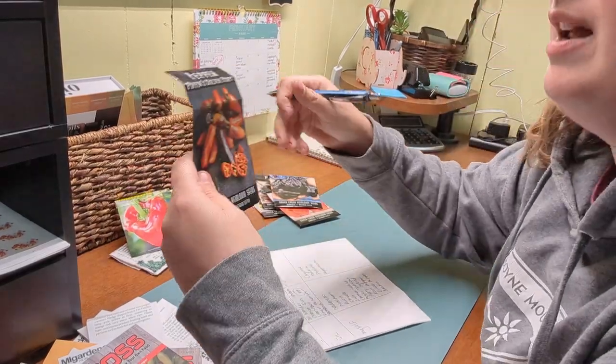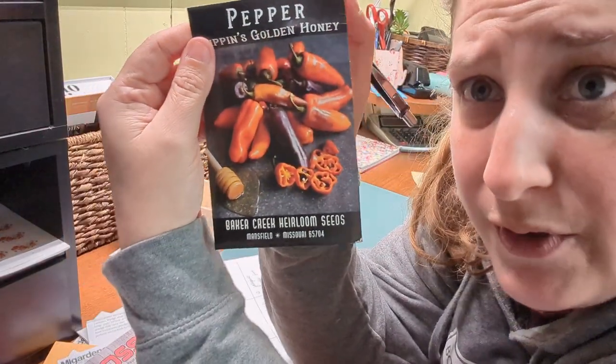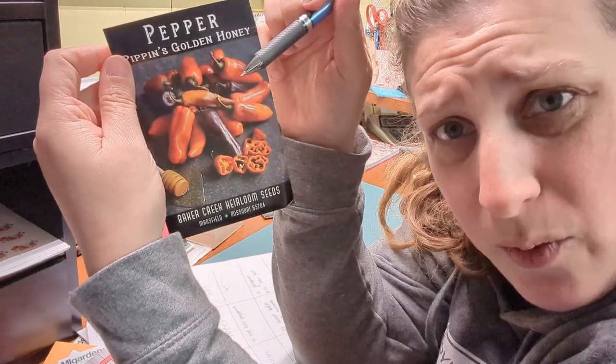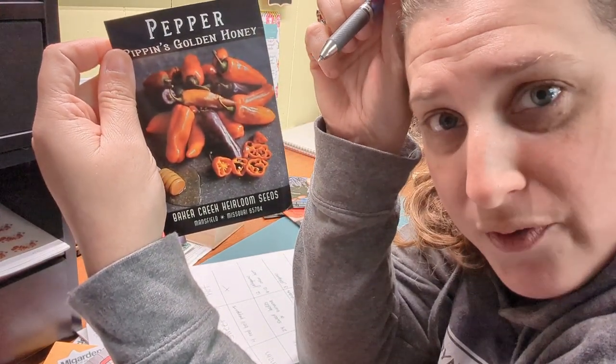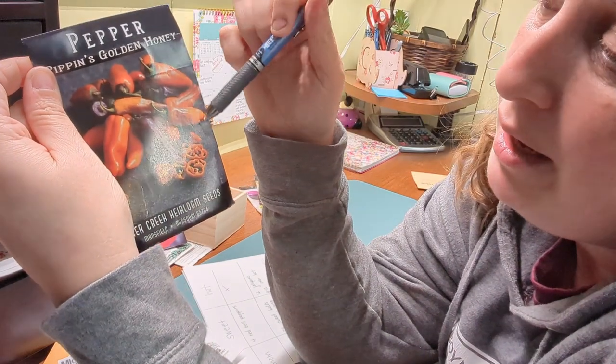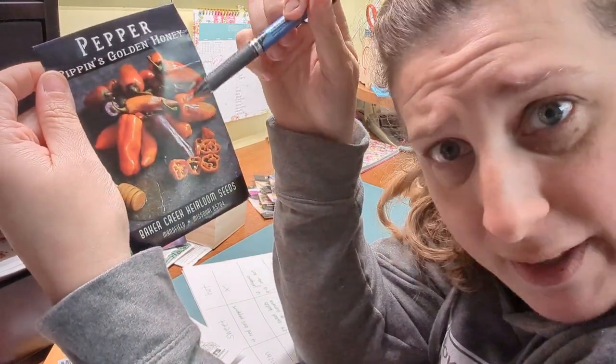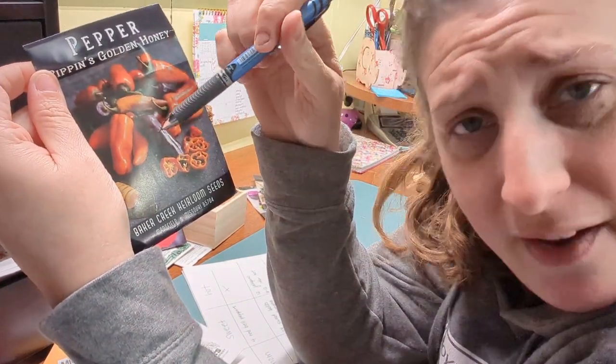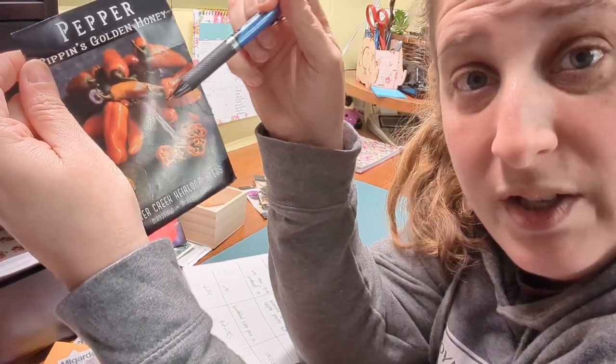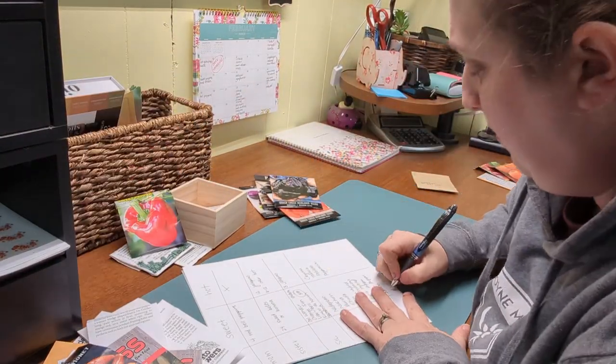And then I'm going to do this one. I did this one last year for the first time. It's called Pippin's Golden Honey. This was a great one to can whole and use for like charcuterie boards or snacking stuff later on. It's got a good size and they have the prettiest colors. It's a good one to put in lunchboxes too. Pippins.